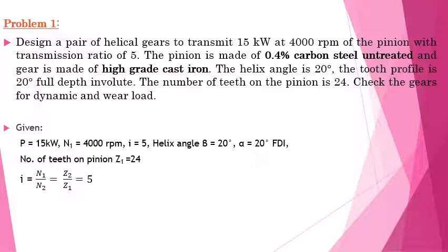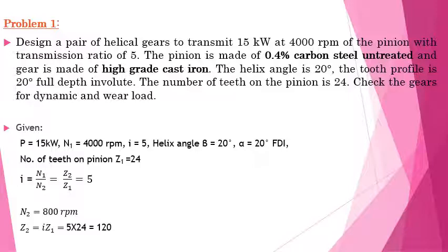We know that the velocity ratio i equals N1 by N2, which equals D2 by D1, which equals Z2 by Z1. Using this, N2 comes out to be 800 RPM. Also, Z2 equals i times Z1, which gives us 120 number of teeth.